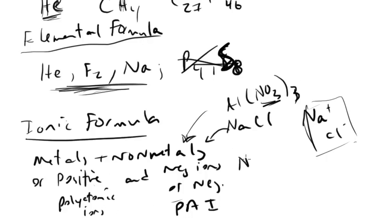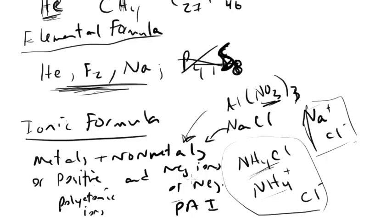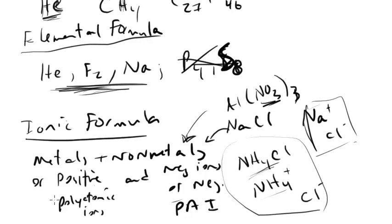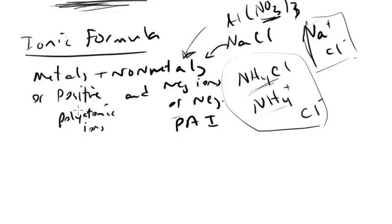An example here would be something like NH4Cl, where NH4 is positive. There's no metals here, but this is still ionic due to the character of the bond. This will become much more clear when we go over bonding. But just for now know that there's a certain thing called an ionic formula, which talks about the bonding between metals and nonmetals, or between things with charges.